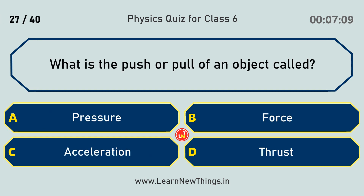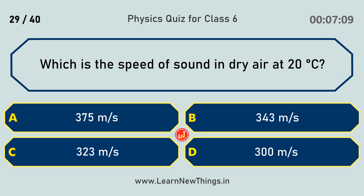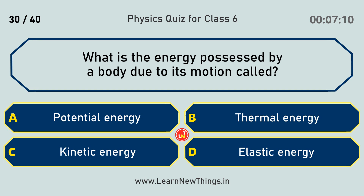What is the push or pull of an object called? Force. Which is the unit of force? Newton. What is the speed of sound in dry air at 20 degrees Celsius? 343 metres per second. What is the energy possessed by a body due to its motion called? Kinetic energy.